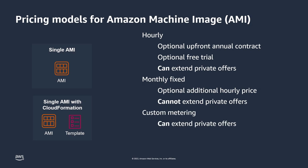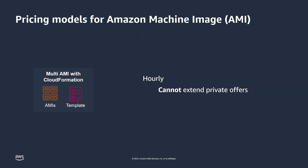With a custom metering pricing model, you can define up to 24 dimensions on which to base costs — for example, the number of product users or the amount of data put through the EC2 instance. You can also create private offers. With contract pricing, you can set a fixed upfront price for buyers' usage of dimensions within a specified contract period, and private offers can be made. The multi-AMI with CloudFormation product type supports only hourly pricing at this time, and private offers cannot be made.